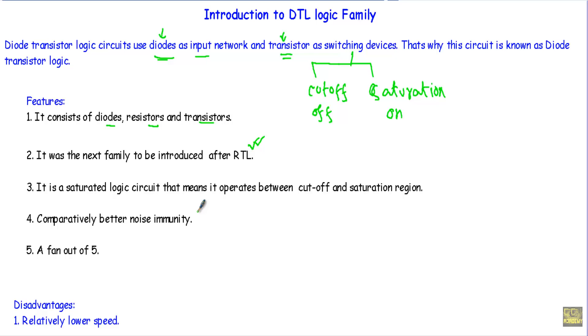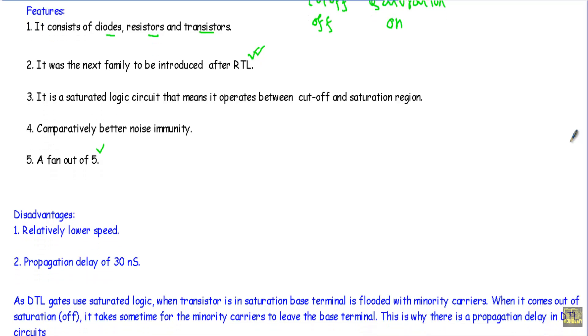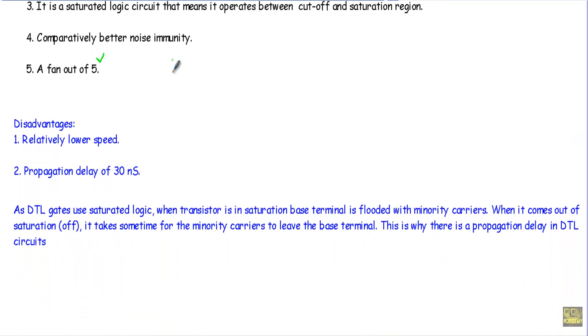a greater value of noise voltage. A DTL logic circuit has a fan out of 5, meaning it can drive five similar DTL logic circuits. There are some disadvantages of this DTL logic circuit: relatively lower speed,